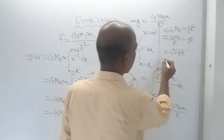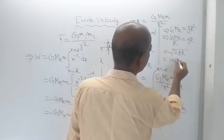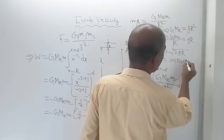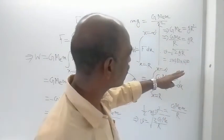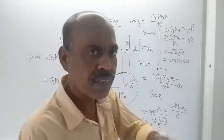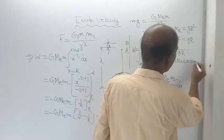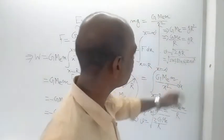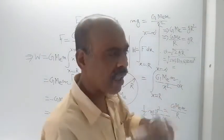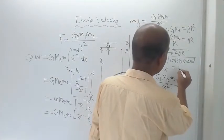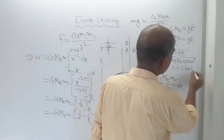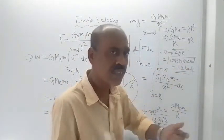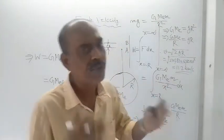If we substitute g = 9.81 m/s² and R = 6400 km = 6400 × 10³ m into v = √(2gR), we get a result in meters per second. Converting to kilometers per second gives approximately 11.2 km/s.